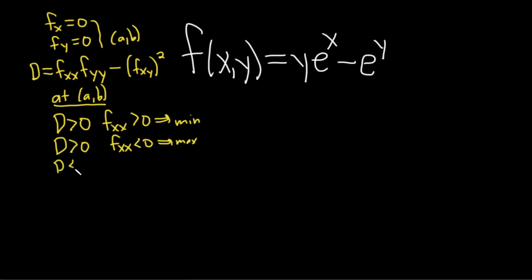If big D is less than zero, we have something called the saddle point. And if big D is equal to zero, the test is inconclusive.